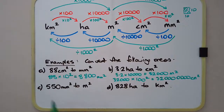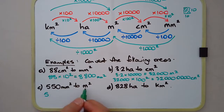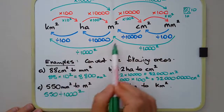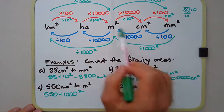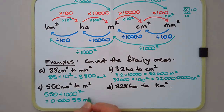Third example: convert 550 square millimetres to square metres. Now we're going from a small unit to a large unit, so it's division. There are 1,000 millimetres in a metre, but because we're talking about area, we divide by 1,000 squared. Rather than risk counting zeros, you can type it into your calculator and you will get 0.00055 square metres.